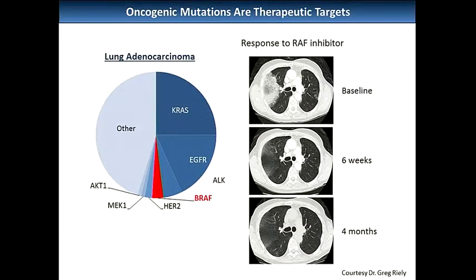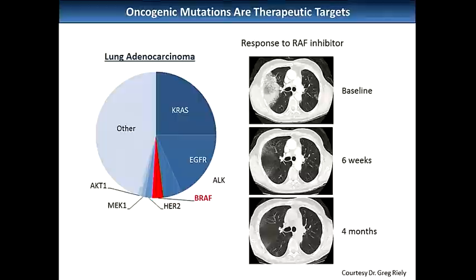And you can sometimes see dramatic responses. This is the first patient with a BRAF V600E mutation treated with vemurafenib outside of melanoma. Although none of the patients with BRAF V600E mutations and lung cancer responded to sorafenib, we've seen these kinds of responses. This patient has been on the trial over two years with a complete response to vemurafenib, and the overall response rate is about 40-something percent.